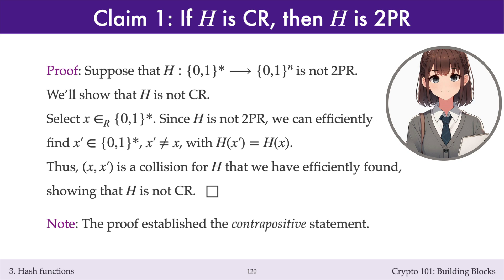If you try to prove the statement directly, you would begin with the assumption that h is collision resistant, which means you cannot efficiently find a collision for h. It's then very awkward to continue with a string of statements that you cannot find something efficiently. So it's always best to prove the contrapositive statement. The proof of such a statement is a constructive algorithm for solving a problem, given an oracle — a hypothetical subroutine for solving a second problem. This is how security proofs are typically constructed in the cryptographic literature.